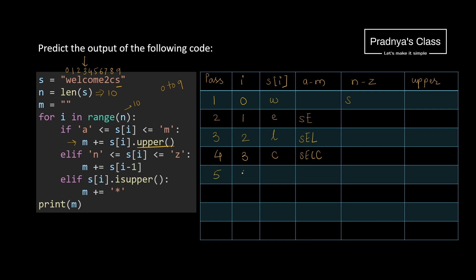In the fifth pass, I is 4. After C we see O, which falls in the range of N to Z. In the second condition, we take S of I minus 1. I is 4, so 4 minus 1 is 3. At index 3 we have letter C. The previous string is SELC, and lowercase c gets concatenated. In the sixth pass I becomes 5. After O we have M — M gets converted to capital letter.